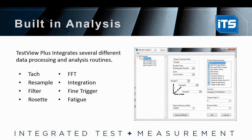Correct me if I'm wrong, but those analyses are on the free version, correct? I know the resample and filter are on the free version, possibly FFT as well. But fatigue and Rosette are probably paid. If there are certain analyses you need that aren't available within the free version and you're interested in trialing with iTestSystem, just let us know. We'll be happy to let you try it out to make sure those analyses work for you.